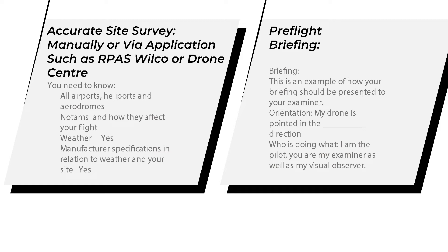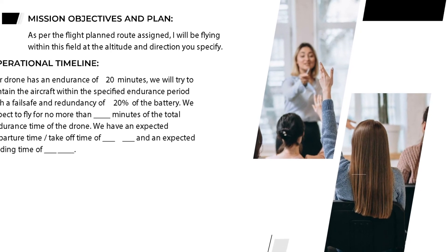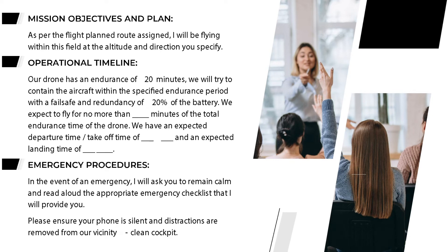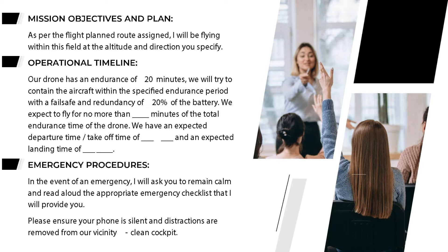This is an example of how your briefing could be presented to your examiner. Orientation: my drone is pointed in the northwest direction. Who is doing what: I am the pilot, you are my examiner, and I will ask you to be my visual observer. Mission objectives and plan: as per the flight plan route assigned, I will be flying within this field at the altitude and directions you specify. Operational timeline: our drone has an endurance of 20 minutes. We will operate within the specified endurance period with a fail-safe and redundancy margin of 20% of the battery — expecting to fly no more than 16 minutes. We have an expected takeoff time of 10 a.m. and an expected landing time of 4:10:15.